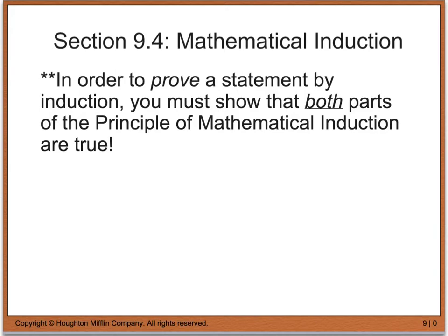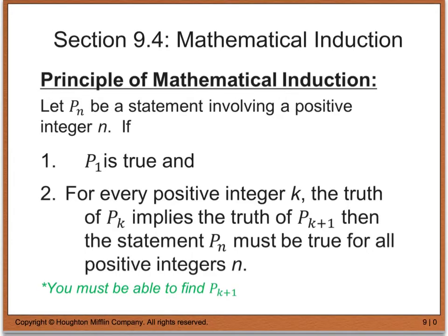In order to prove that a statement is an actual formula or pattern or rule through induction, we have to show that both parts of what we call the principle of mathematical induction are true. If the first part isn't true, we don't even need to go on to the second part. The principle of mathematical induction says that if p sub n is a statement involving a positive integer n, we have to prove first that p sub 1 is true, and then for every positive integer k, we have to find p sub k plus 1 — which is really like the next term.